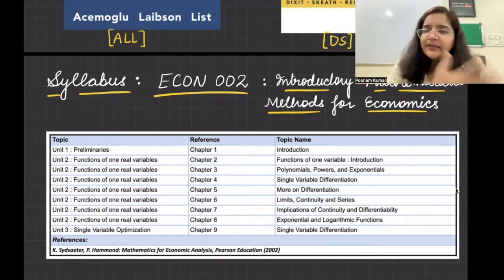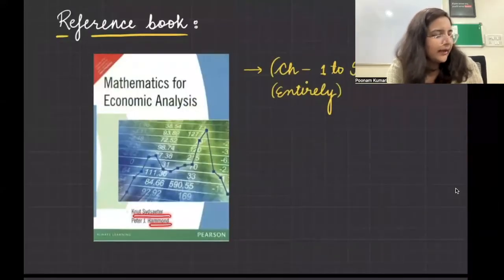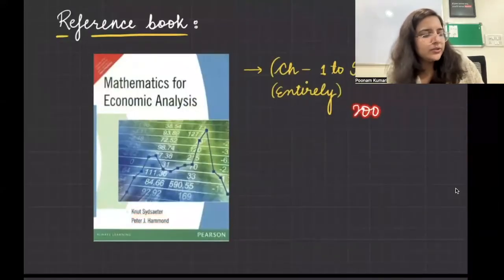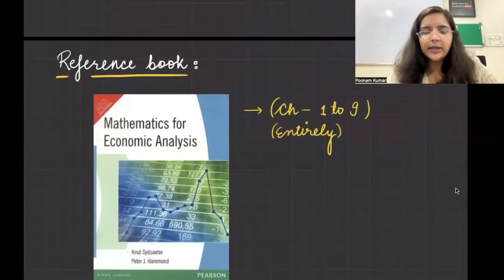So it's very easy to remember. Your reference book is going to be Sydsaeter and Hammond, 2002 edition. You have to do all the chapters starting from chapter number one to nine. Okay.